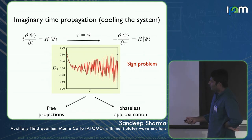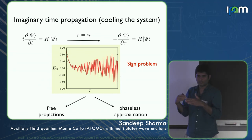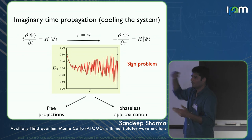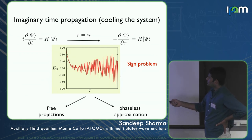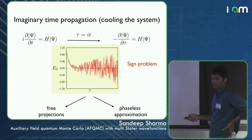In free projection, as you propagate forward in imaginary time, the noise grows and the energy decays — it's a competition between two exponentials. If you start with a wave function close enough to the ground state, you converge to the exact energy before the noise becomes unbearable. So you want a starting wave function that's good enough that with a short projection time, you already reach the ground state.